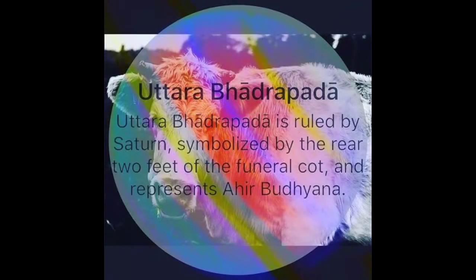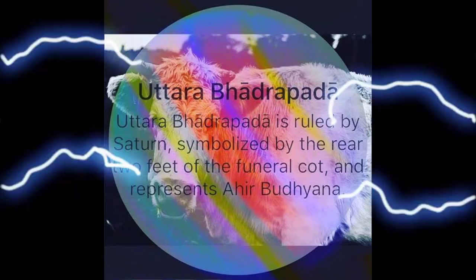The ruling graha of this nakshatra is Shani or Saturn, and the ruling deity is Ahir-Bhudhyana. The animal representation of this nakshatra is a cow, and people born in this nakshatra are considered to be as holy as the cow.